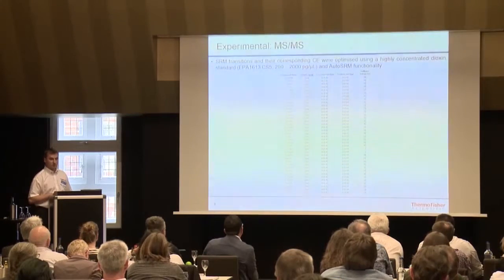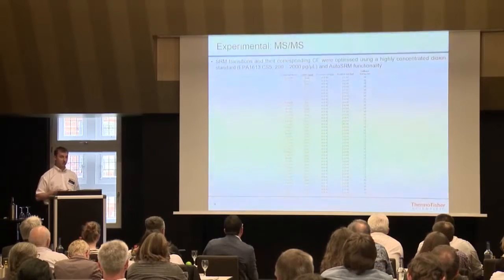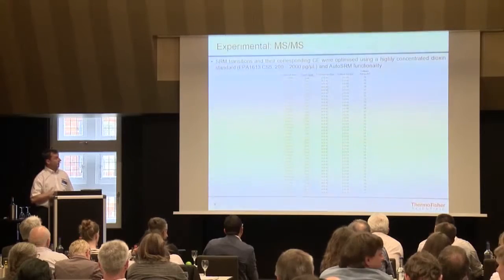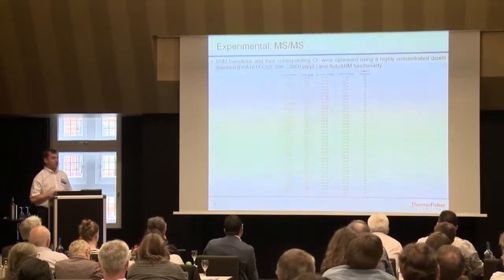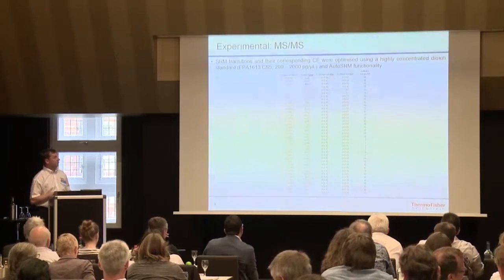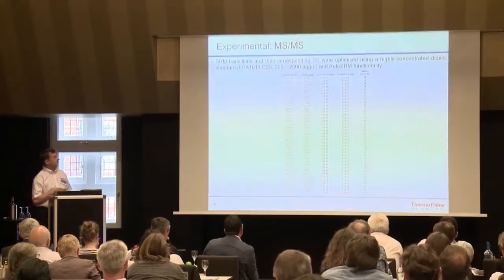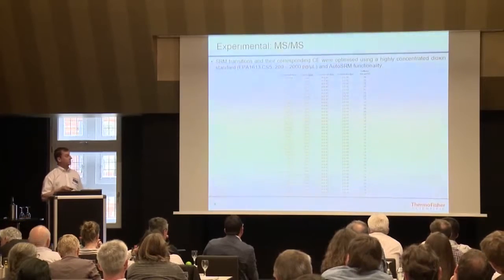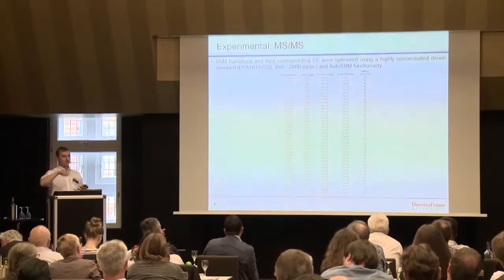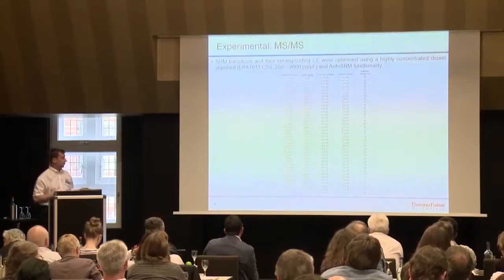If you're not familiar with this piece of software, we can talk after. With auto-SRM you can automate the amount of energy required for each transition in a very fast way. You just need an internal standard, a calibration standard such as an EPA CS5 or CS4. Run your samples, and you can use a profile of energies to select where maximization of signal occurs — and then that's it.